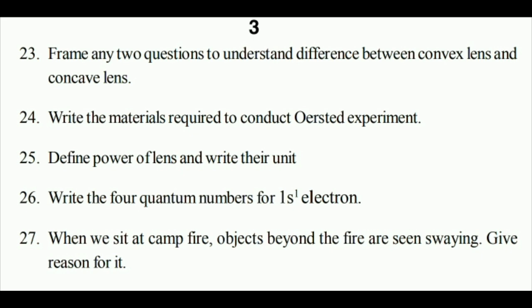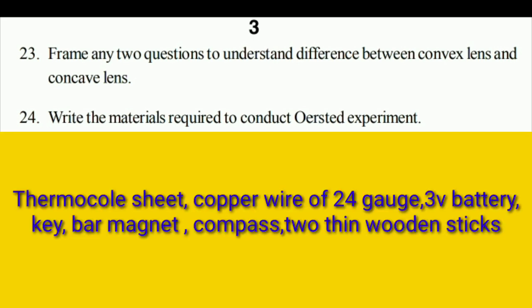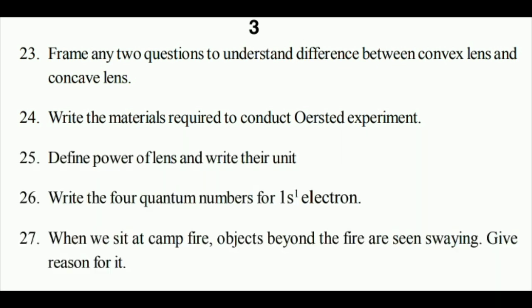Write the materials required to conduct the Oersted experiment. Materials are: copper wire of 24 gauge, 3 volts battery, bar magnet, compass, 2 thin wooden sticks.